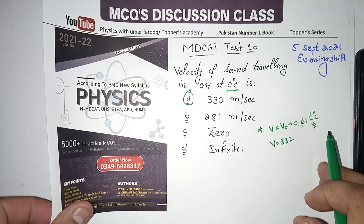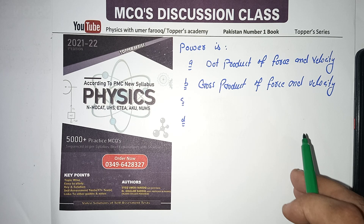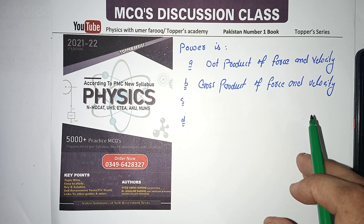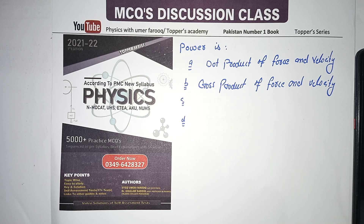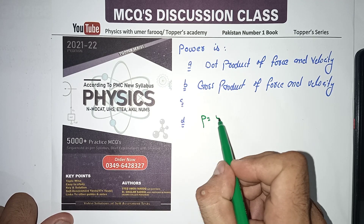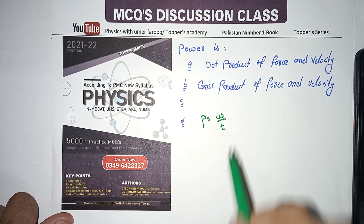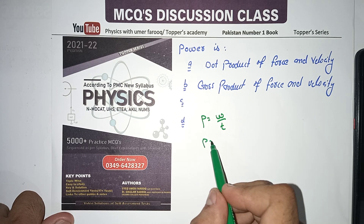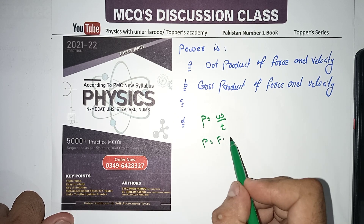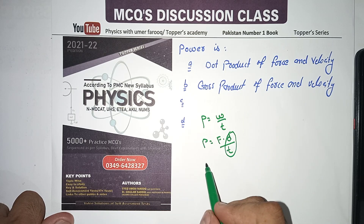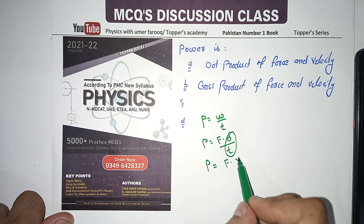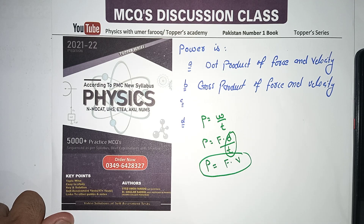Next MCQ: Power is the dot product of force and velocity. We write: Power = W/t, and W = F·d, so P = F·d/t = F·v. Therefore, option A — F dot v — is the correct answer.